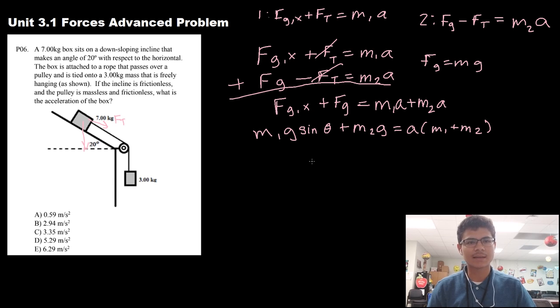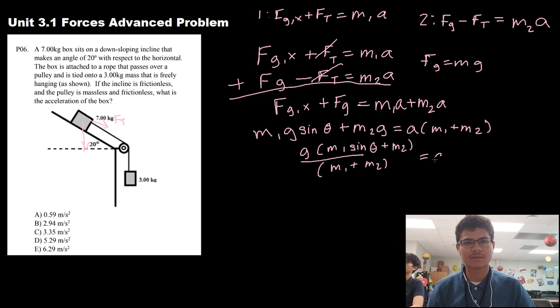Now we have everything here. I'm going to take out a g here, so we have g times m1 sine of 20 plus m2, and I'm going to divide by m1 plus m2 to get the acceleration. Now we have everything that we need, so I'm going to go ahead and plug it into our calculator.